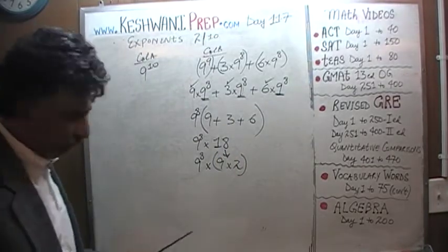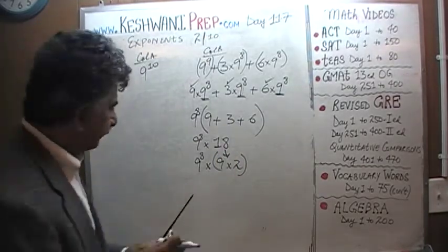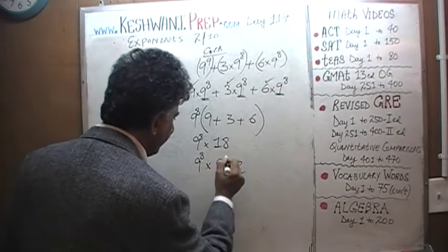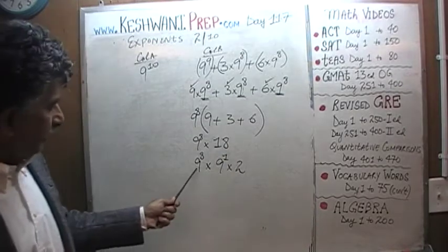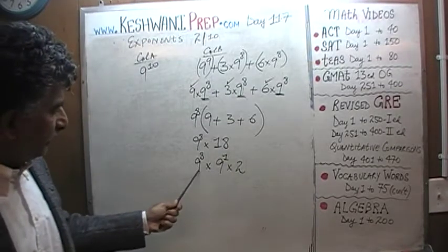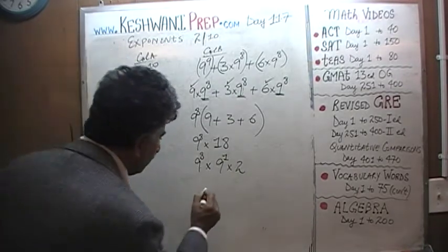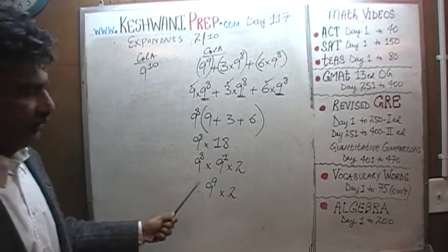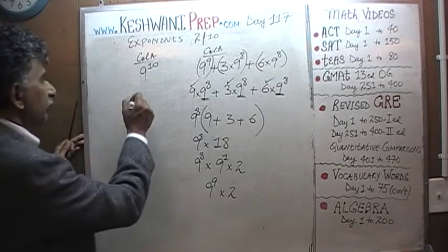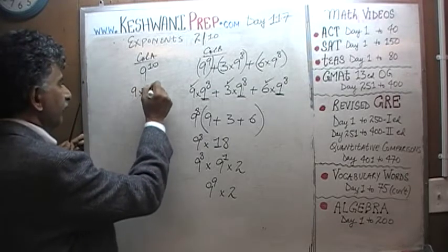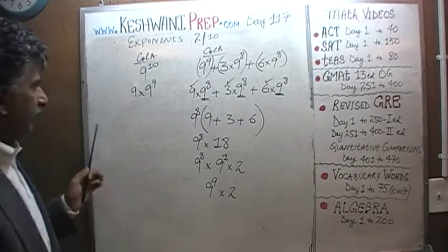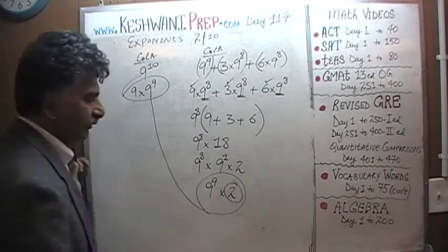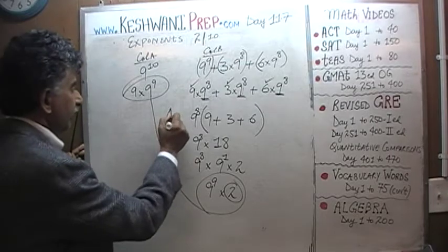Now we have 9 raised to 1 here and 9 raised to 8 here. Combining these two gives us 9 raised to 9, times 2. We have to compare this quantity versus 9 raised to 10, which is the same as 9 times 9 raised to 9. So here we have 9 times 9 raised to 9 versus 2 times 9 raised to 9. The answer turns out to be A.